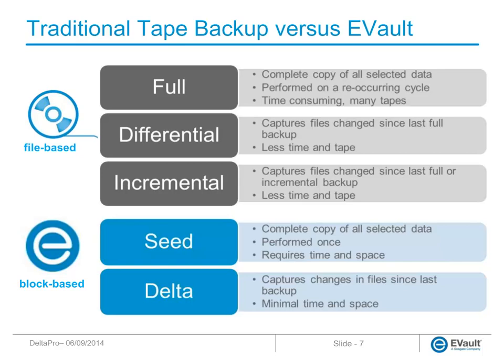Differential backups back up only the data that has changed since the last full backup, which reduces the amount of data that needs to be backed up on a given day. However, the longer the period between full backups, the larger the differential backups become. There is also the added complexity of having to use the full backup tapes and the last differential backup tapes to restore data when data is lost. Incremental backups capture only the changes since the last backup, also reducing daily backup size, but restores are even more complex because you must use the full backup tapes and a series of incremental backup tapes to restore lost data. One of the main problems with either differential or incremental backups is that they are file-based — if any part of a file changes, the whole file must be backed up again, which wastes time and storage space.